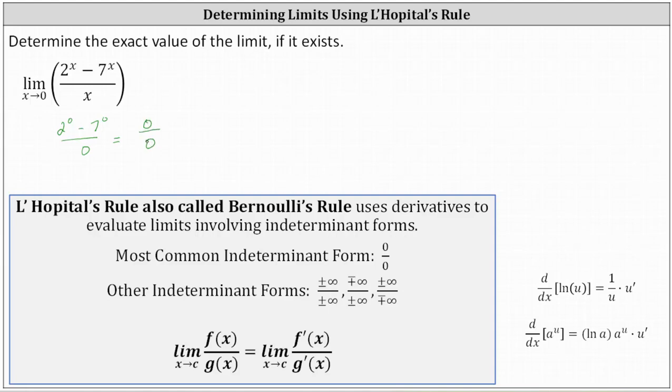Notice we have the indeterminate form of zero divided by zero. This indicates we cannot determine the exact value of the limit by performing direct substitution. However, it does mean we can use L'Hôpital's rule to help us determine the limit.